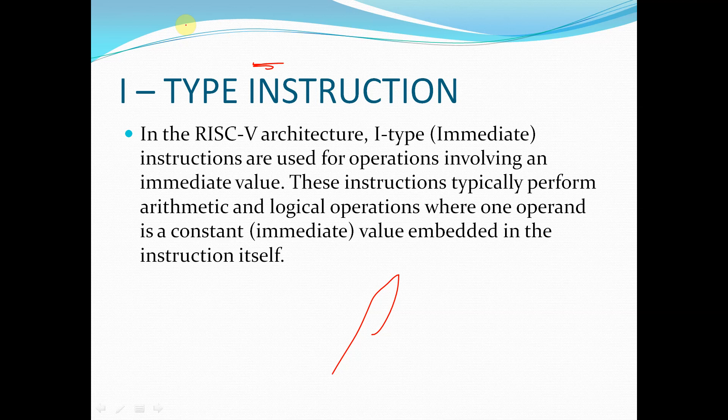Whereas in the case of I-Type instructions, the value is directly given to the ALU for the operation — whether it may be add, subtract, multiply, or storing or loading. The immediate value will be given directly. In case of R-Type instructions the instruction will look like the following example.